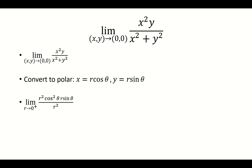x squared turns into r squared times cosine squared theta. y is just r sine theta. And then x squared plus y squared is r squared. The r squareds are going to cancel, and so we have r times cosine squared theta times sine theta. The limit depends only on r, so cosine squared theta and sine theta — you could just think of those as constants.